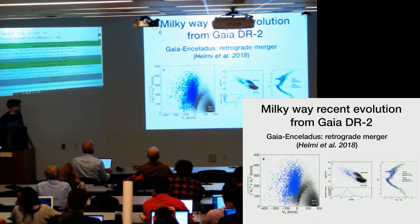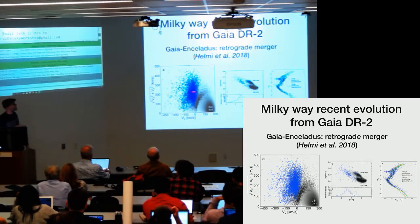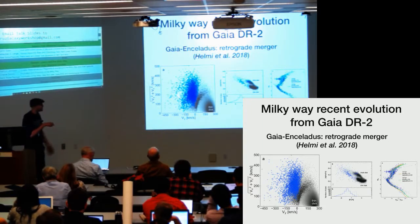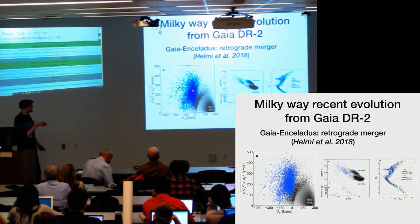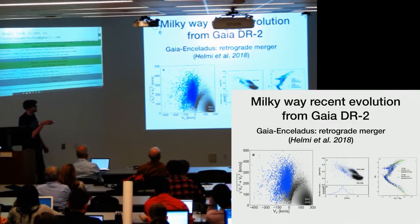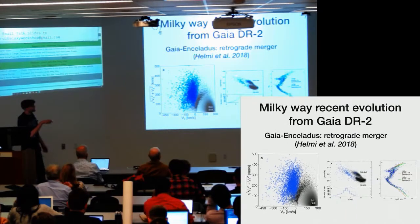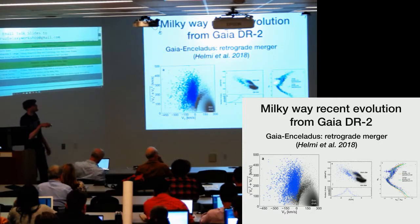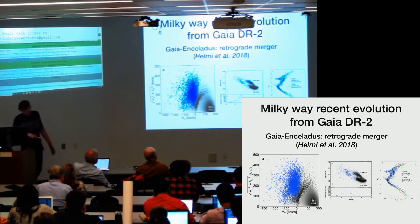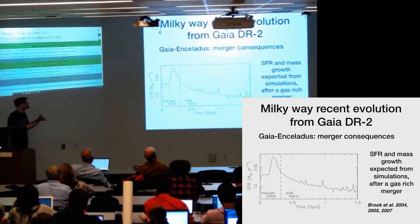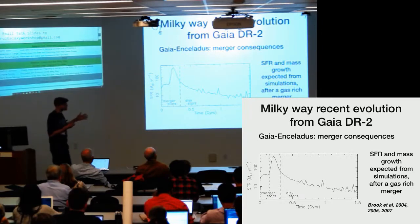After that, with Amina Helmi and Gaia DR2 data, they found that just compatible with this quenching event — just before it — there was this retrograde merger with the Gaia-Enceladus, or the Sausage. They saw it both in kinematic space, where it has retrograde velocities — the blue stars are the ones from the Gaia-Enceladus — and also in the chemical space. After fitting some isochrones, they found that basically all these stars were born between 10 and 13 gigayears ago.